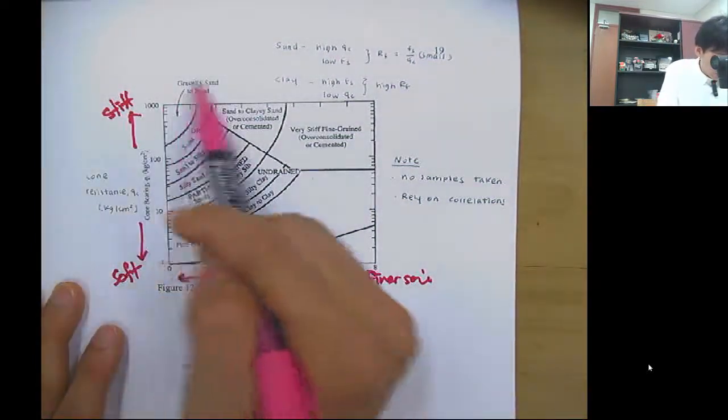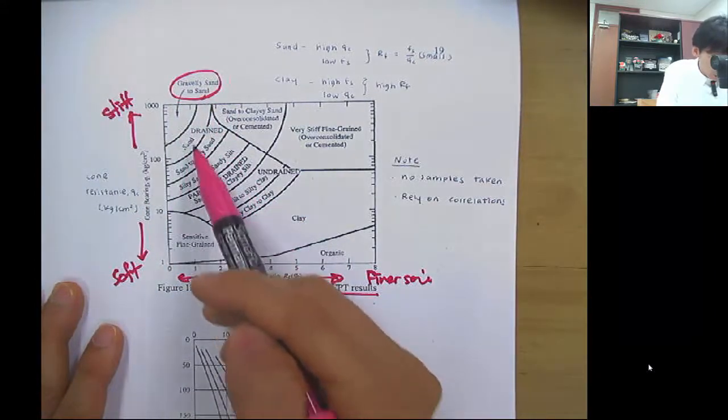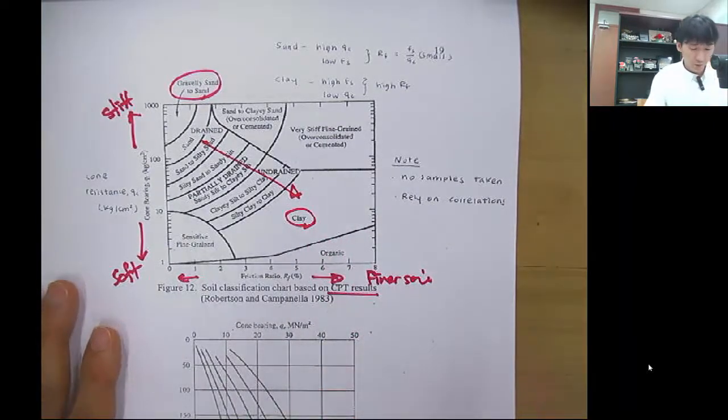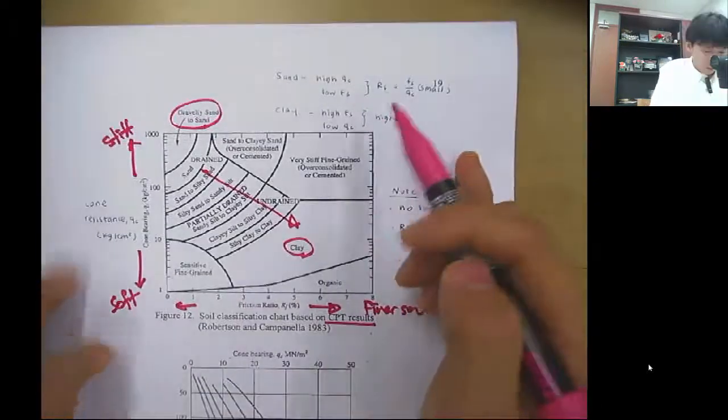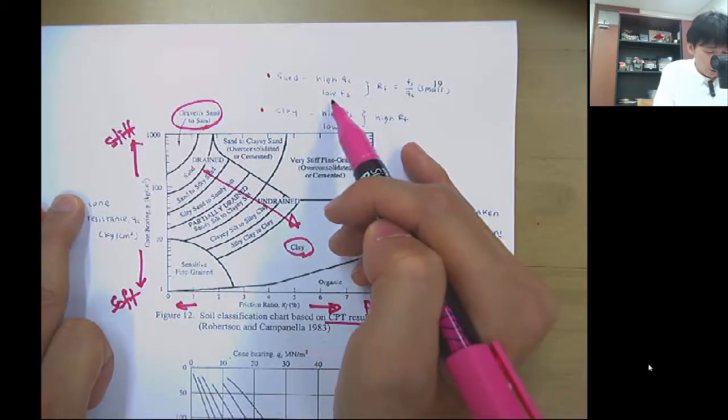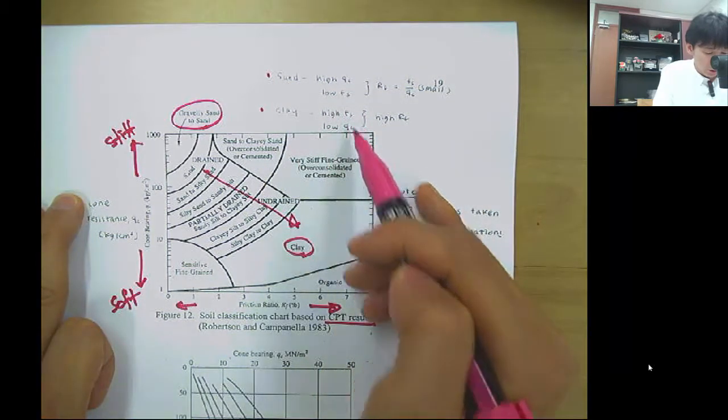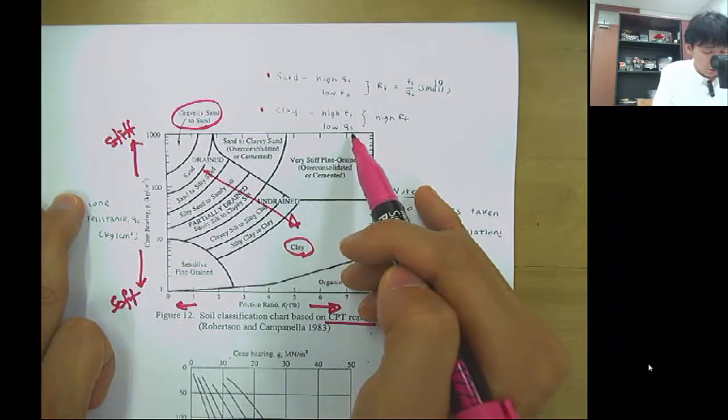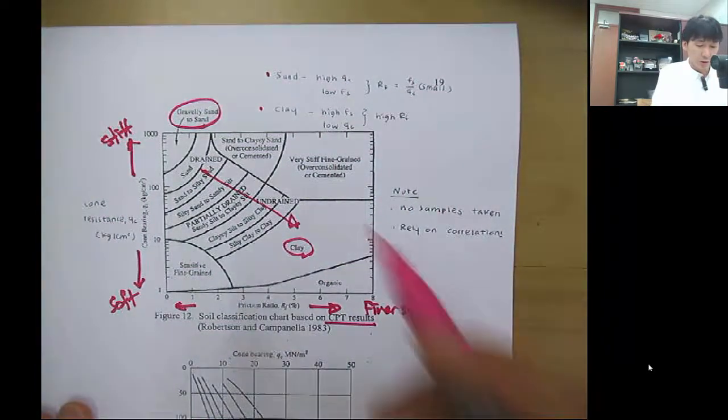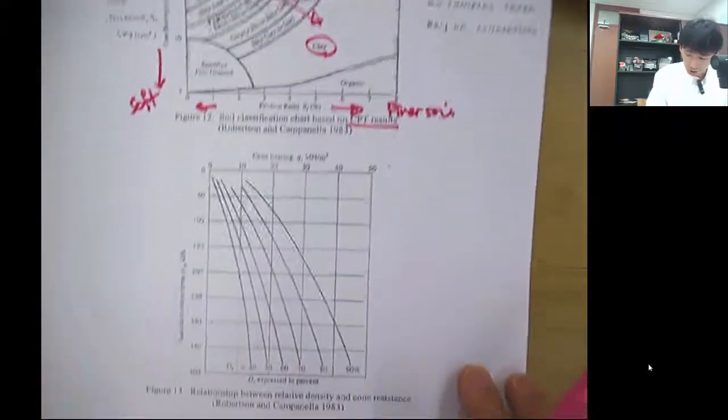As you go through here, it's more finer soil, the clay. Again, the sand has the high QC but it has low Fs. The clay has high Fs frictional resistance, but it has low cone resistance, cone tip resistance. This can give you some guideline to interpret the CPT.